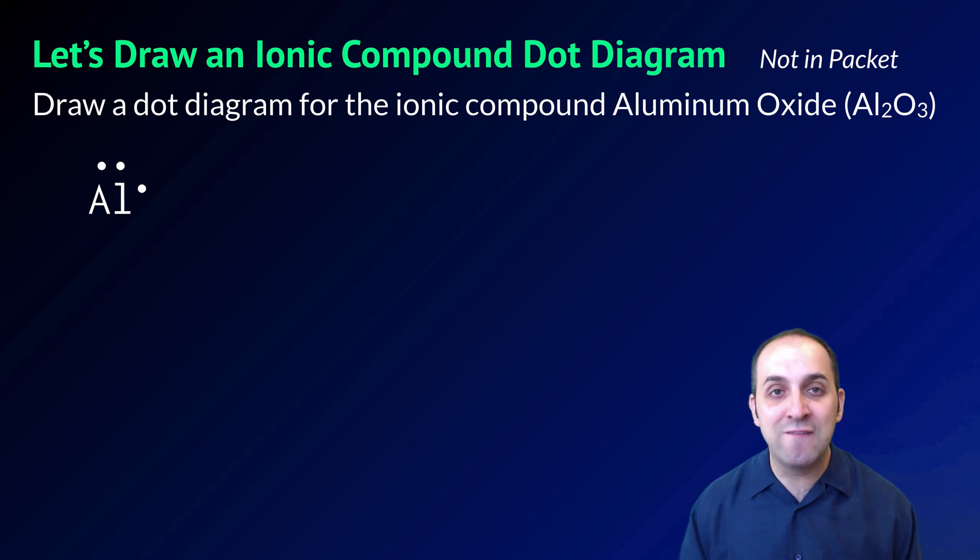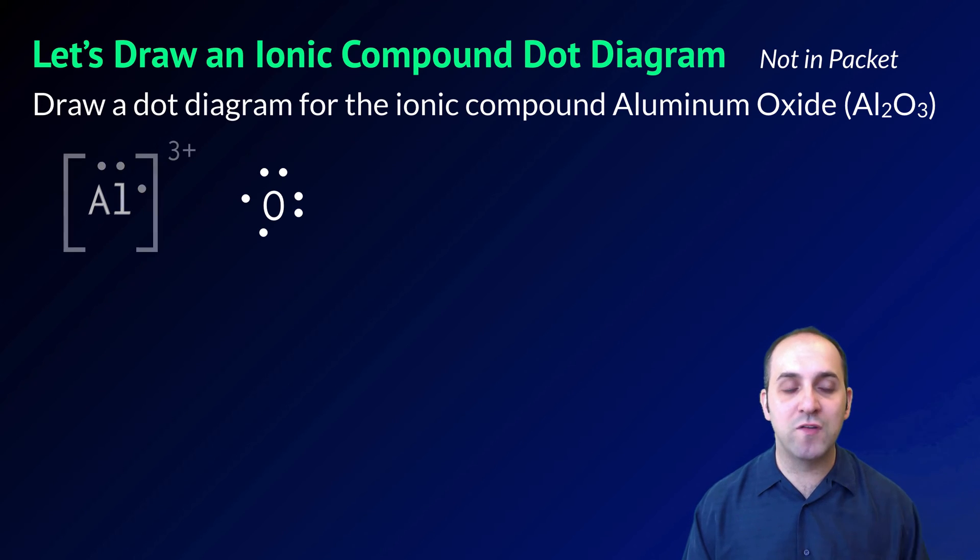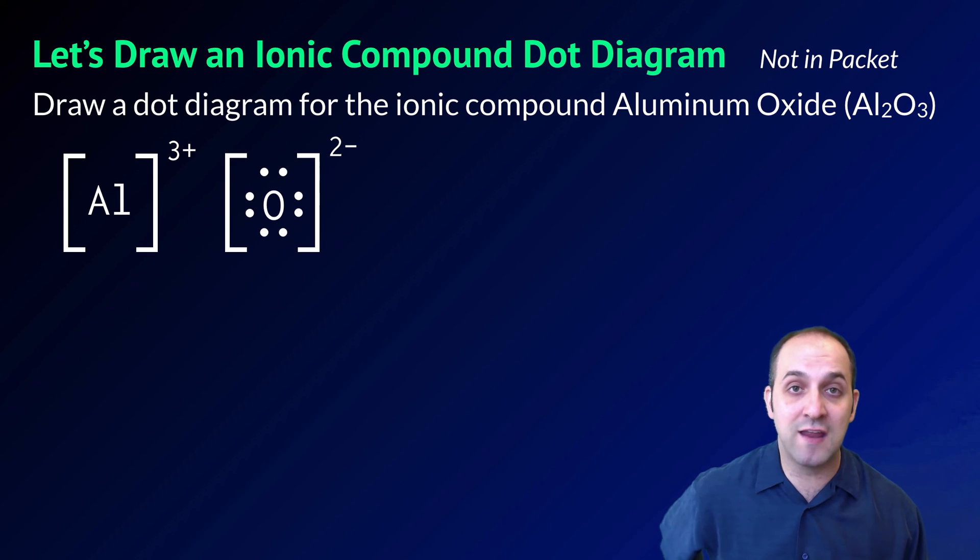So when aluminum is neutral, it has three valence electrons, and when oxygen is neutral, it has six valence electrons. When they form ions, aluminum is going to lose its three valence electrons, and take on a plus three charge, and oxygen is going to gain two valence electrons and take on a negative two charge. But this is not the dot diagram for aluminum oxide, because if I add plus three and minus two, I do not get to zero. So in order to get the full dot diagram for this compound, I need to alternate these ions until I have a total that adds up to zero.